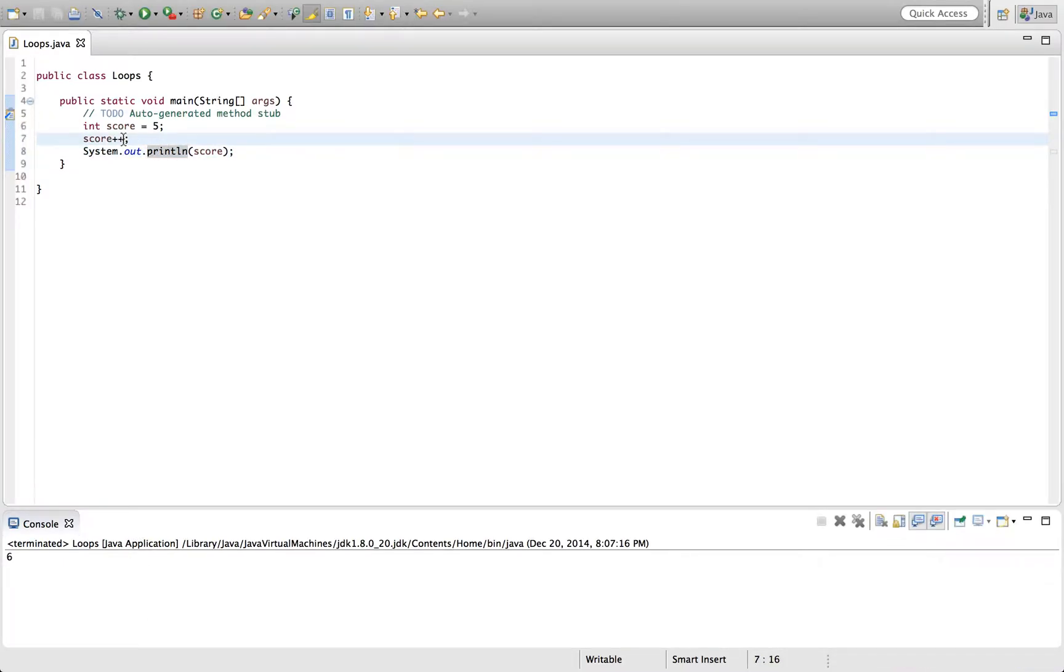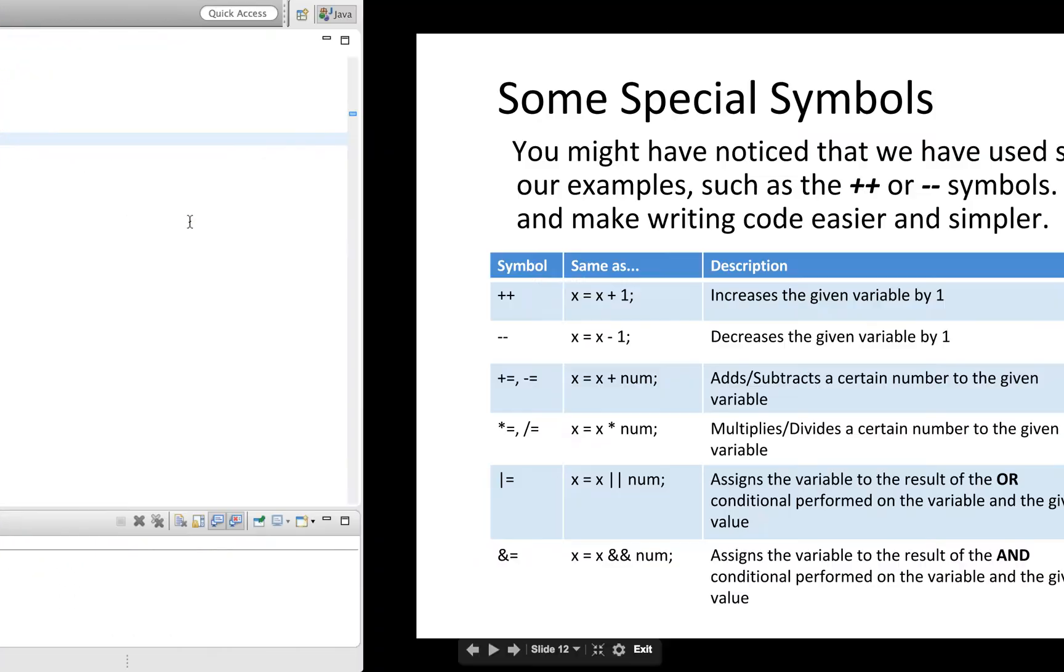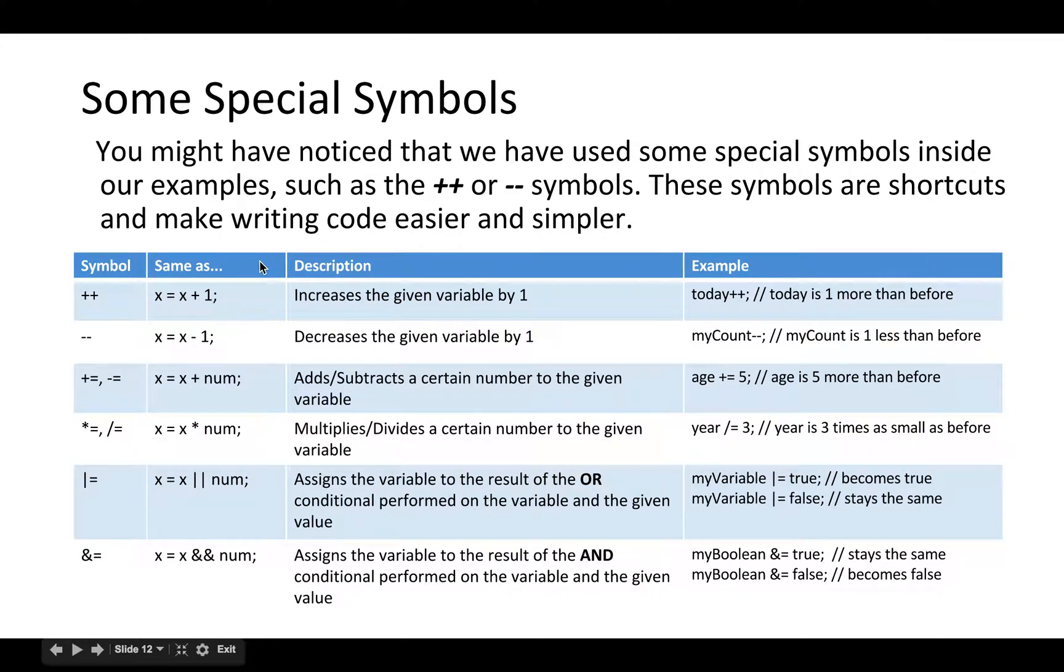And just like score plus plus increases the value by one, score minus minus decreases the value by one. So you can run this, and eventually you'll find out that score is decreased by one. Those are what are called the increment and decrement operators.